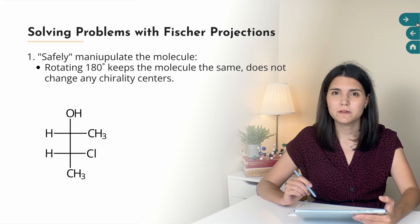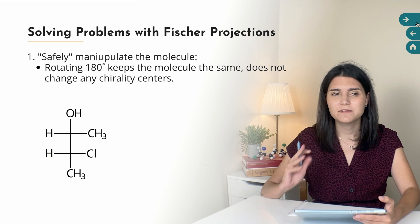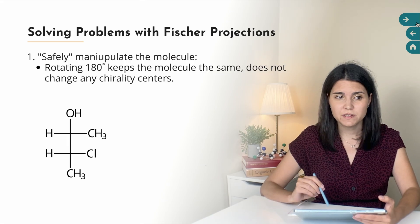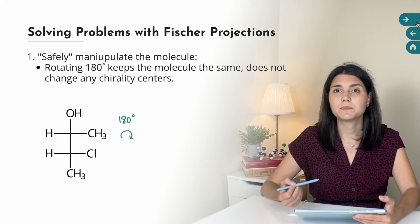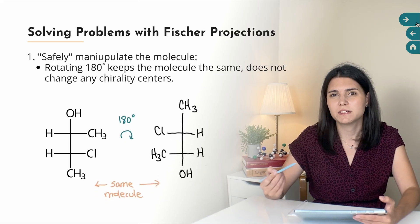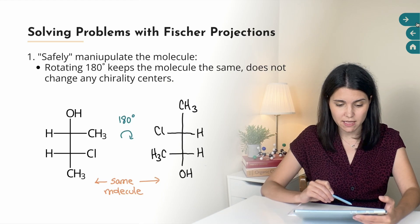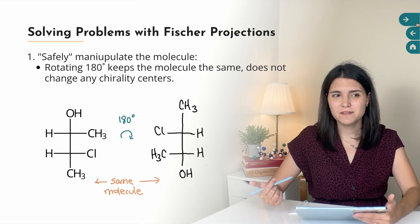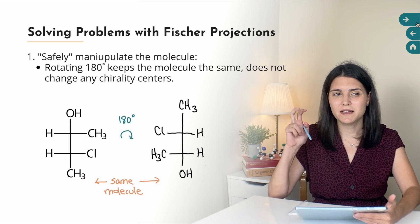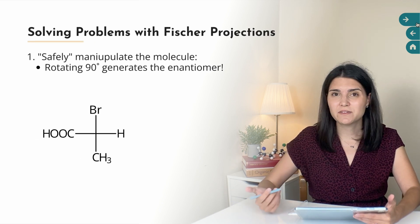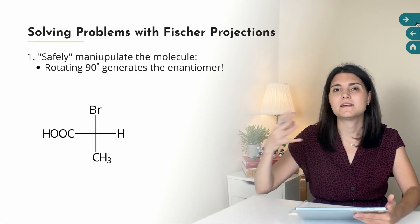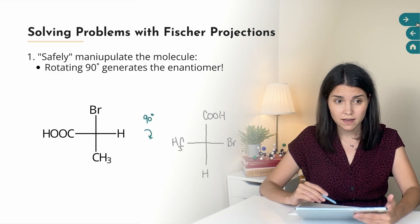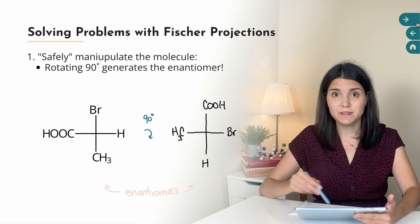My first tip is to know how to safely manipulate a Fischer projection. When comparing two, you might have to manipulate one to make a better comparison. You can rotate a Fischer projection 180 degrees in the plane of the page and get the same molecule — it's just upside down. You need to know that 180 degrees is safe because 90 degree rotations are not. A 90 degree rotation generates the enantiomer, not just an identical molecule.